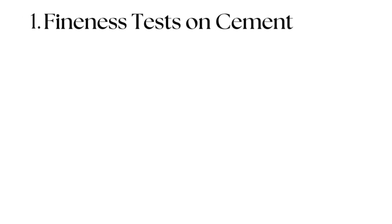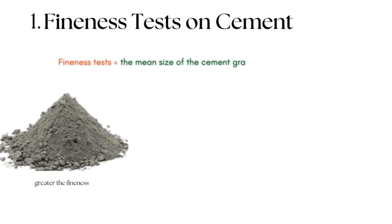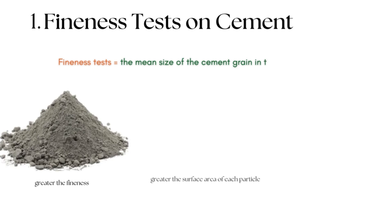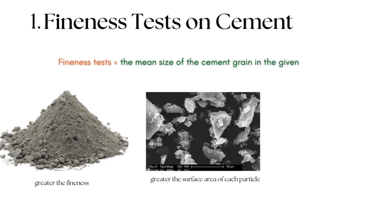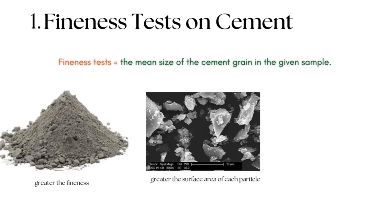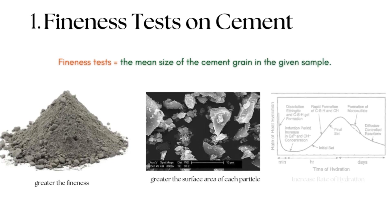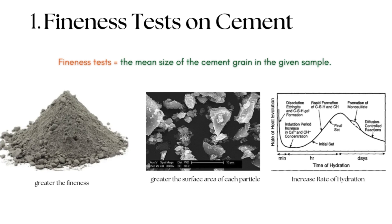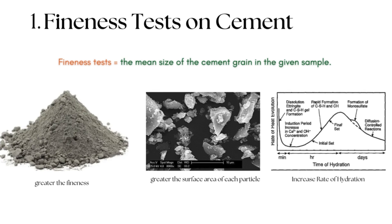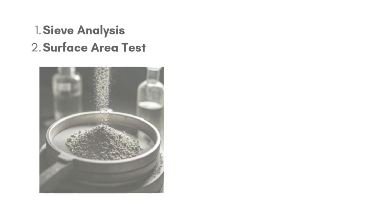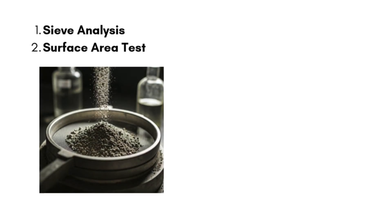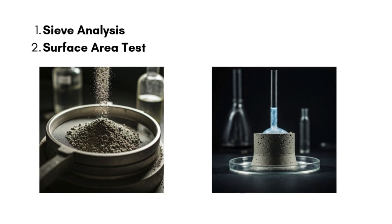Fineness Tests on Cement: Fineness tests on cement determine the mean size of the cement grain in the given sample. The greater the fineness, the greater the surface area of each particle, and the greater the rate of hydration. The fineness test on cement is determined either by sieve analysis or surface area test.